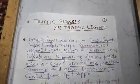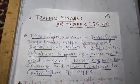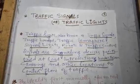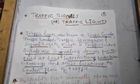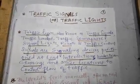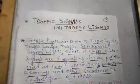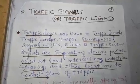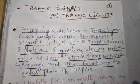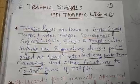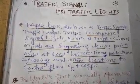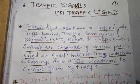Traffic lights or traffic signals are found at crossings, pedestrian crossings, and other locations on the road. Different types of signals are used to control and smoothly manage the flow of traffic. We also call traffic signals by other names such as traffic lamp or traffic semaphore.